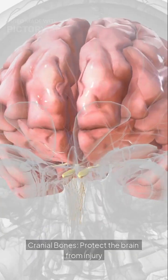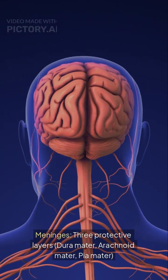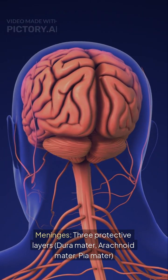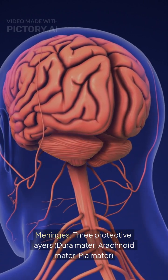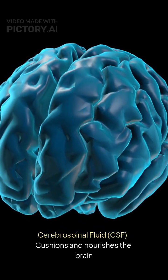Brain protection includes cranial bones, which protect the brain from injury, and the meninges, three protective layers: duramater, arachnoid matter, and pia matter. Cerebro-spinal fluid, or CSF.